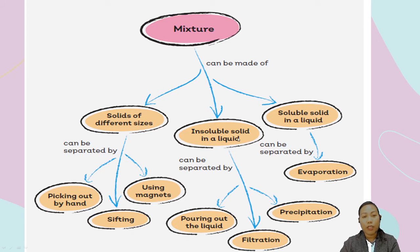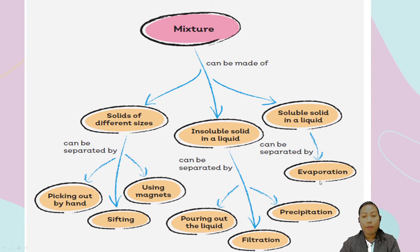For insoluble solids in a liquid, we can use decantation — pouring out the liquid — and also filtration and precipitation. For soluble solids in a liquid, we can separate them using the evaporation technique. Those are the ways to separate different kinds of mixtures.